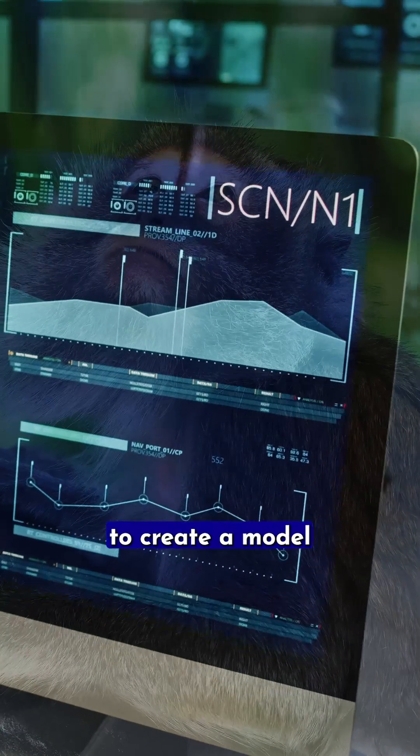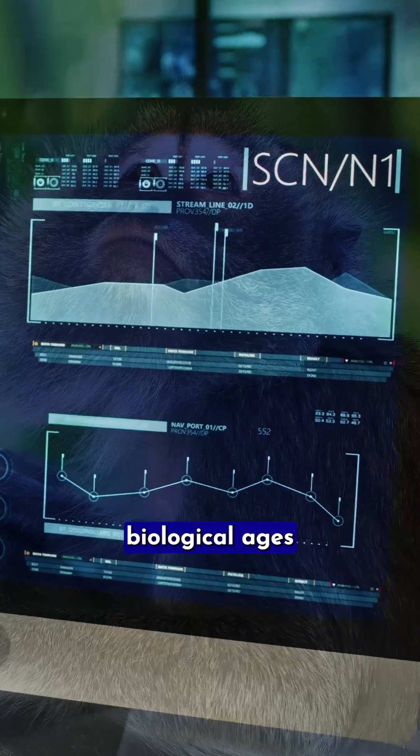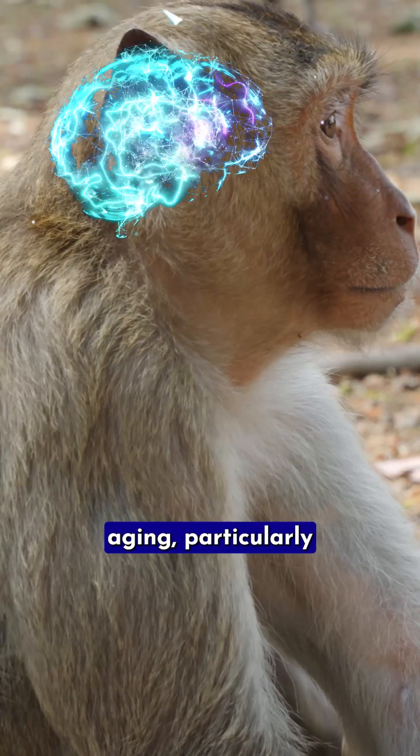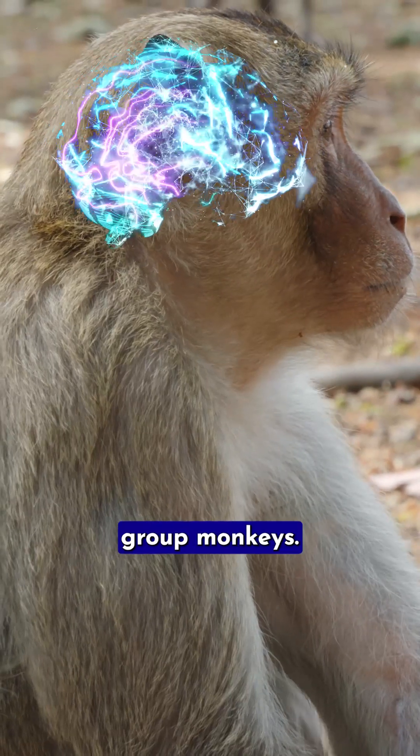Scientists conducted tests to create a model to estimate the monkey's expected and actual biological ages across different organs. The metformin monkeys showed signs of slower aging, particularly in their livers and brains, compared to the control group monkeys.